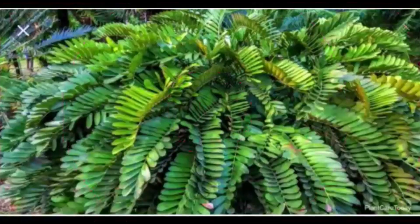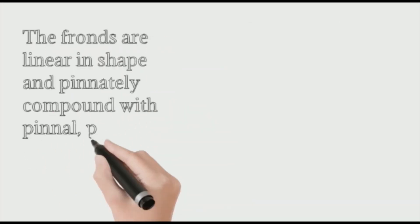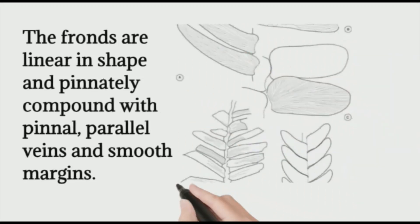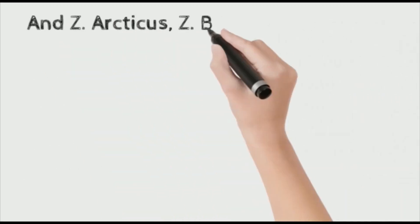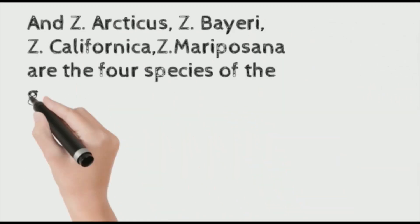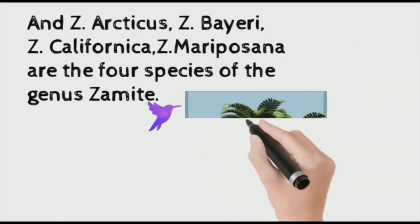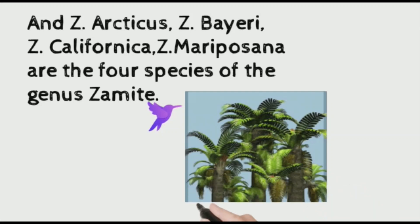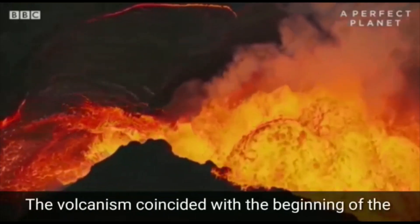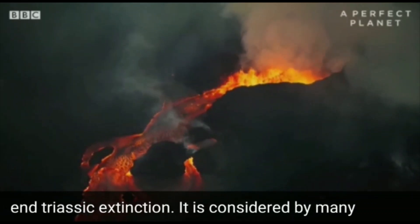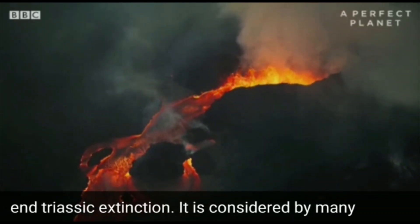Zamites resembles the extant cycad Zamia. The fronds are linear in shape and pinnately compound with pinnule parallel veins and smooth margins. There are four species found of this genus: Zamites arcticus, Zamites berryi, Zamites californica, and Zamites mariposana.